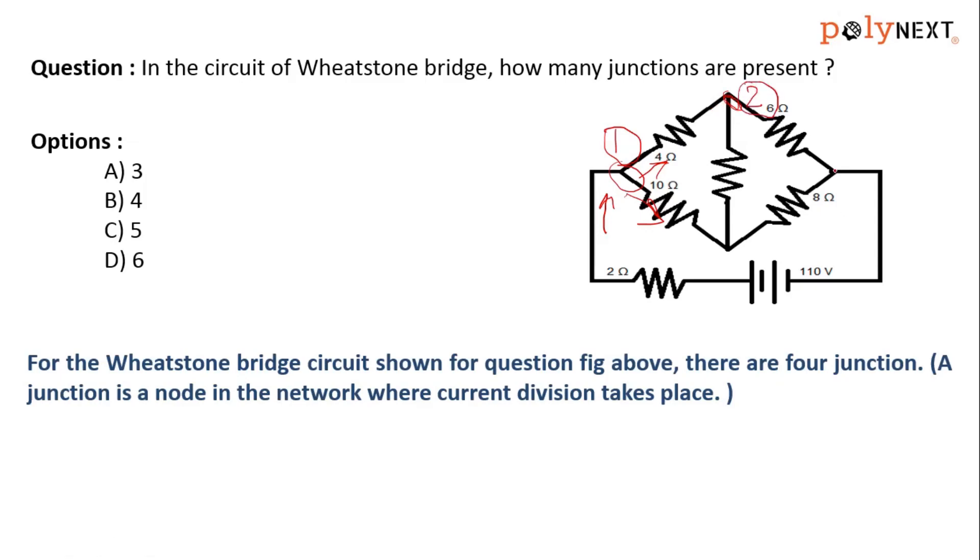This is also a junction because of incoming and outgoing current. This is outgoing, this is outgoing, this is incoming. So we can say this is the third junction.